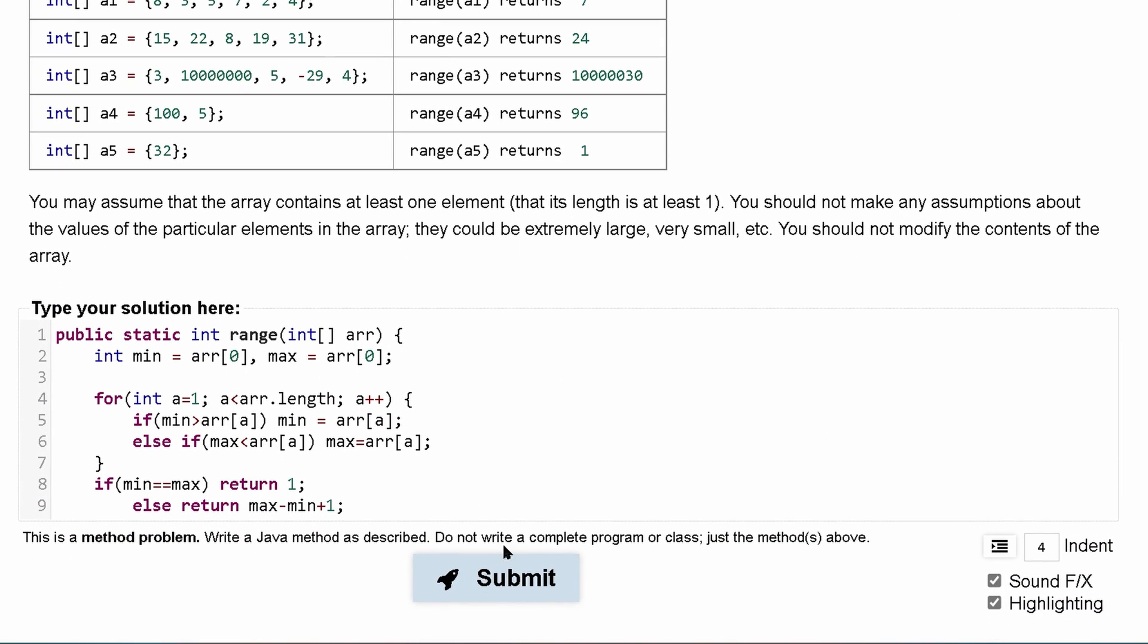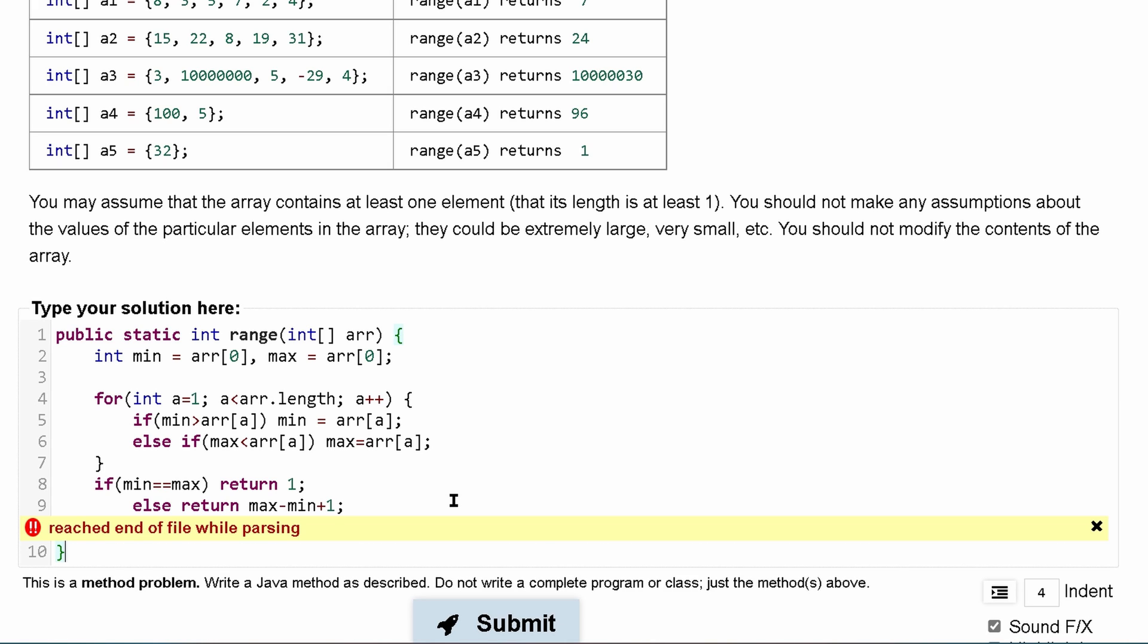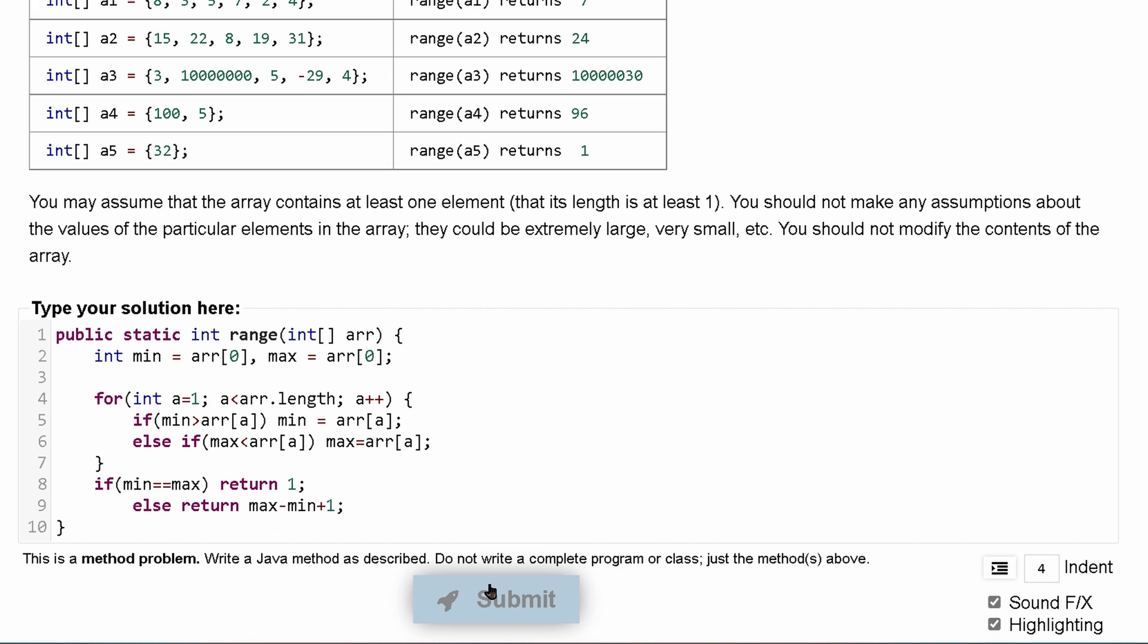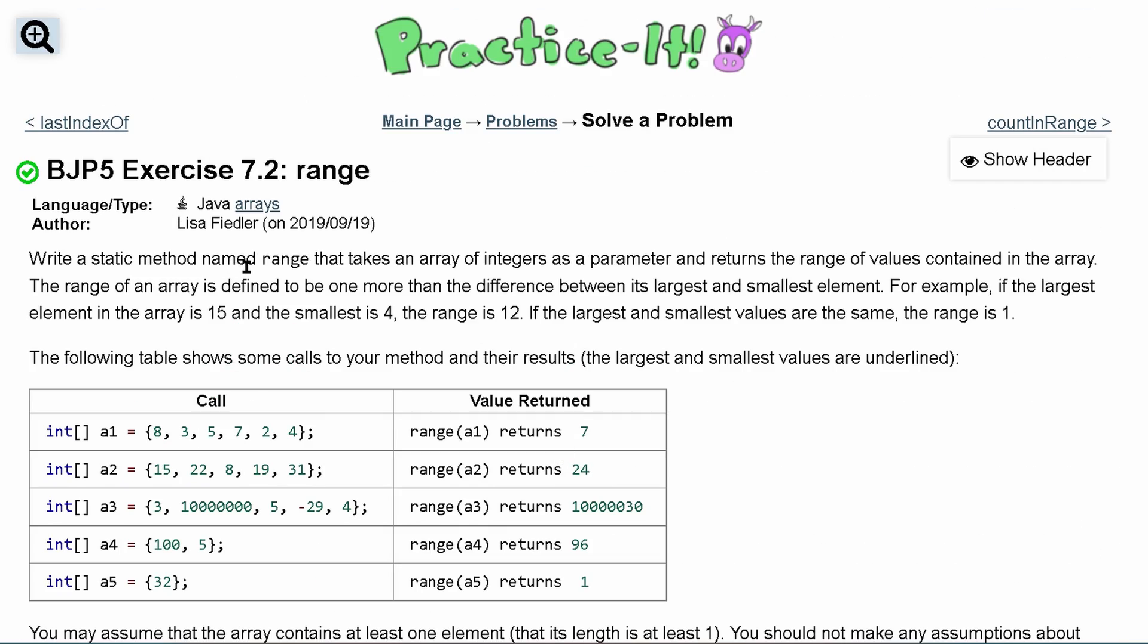So we can press submit on this. And I always forget this last brace, I don't understand my problem. So let's submit this and pass five out of five tests. That's how we would do this self check exercise 7.2 range.